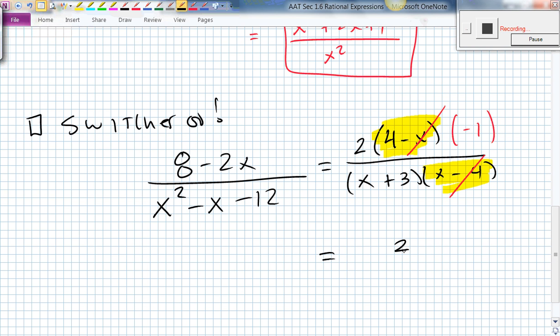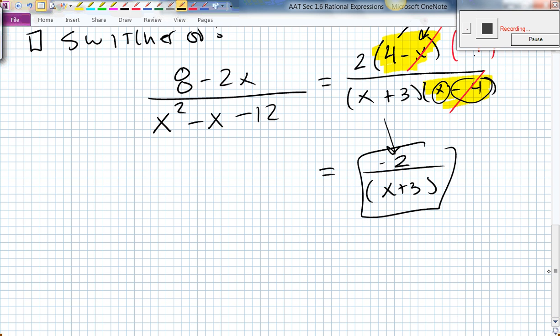That will give me negative 2 divided by x plus 3 as an answer. The reason that's true is because negative 1 times negative x gives me positive x, which is what I have down there. Negative 1 times positive 4 is negative 4, which is what I have down there. So negative 1 times 2 is why my answer is now negative in the end. That's what I call the switcheroo.